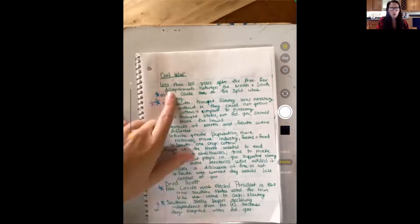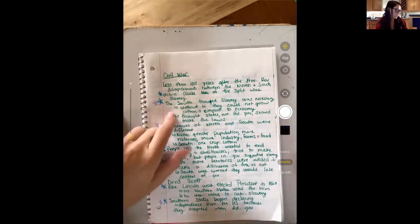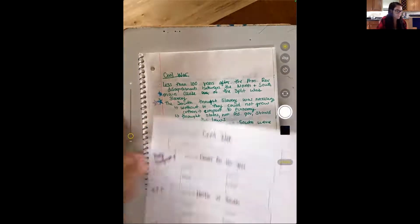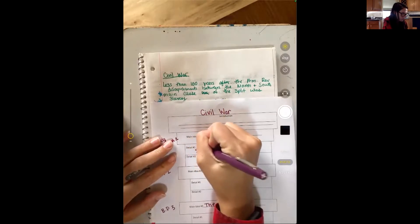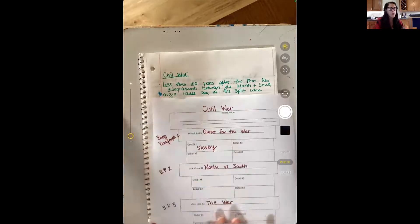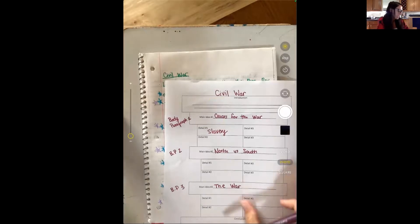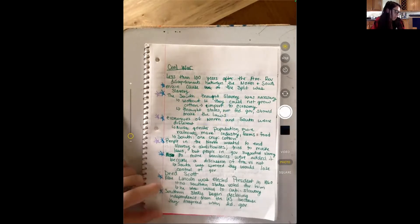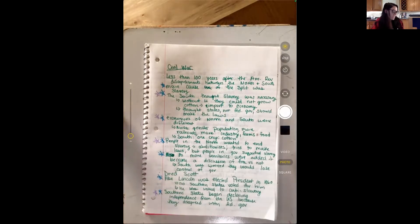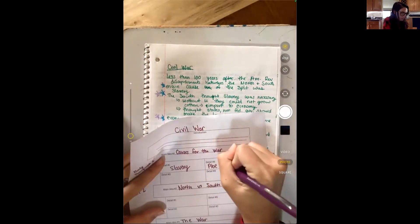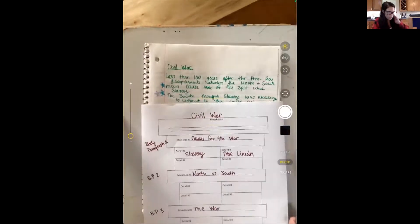So I don't have to write my whole note down. This one says the main cause of the split was slavery. I think that is very important. So cause for the war detail one, I'm just going to put slavery. I'm just kind of jotting down notes. It's just an organizer to help me plan out my writing. Then I'm going to keep looking. So Abraham Lincoln was elected president. I wrote no Southern States voted for him. He was linked to anti-slavery. So I'm going to put Abe Lincoln in my notes.